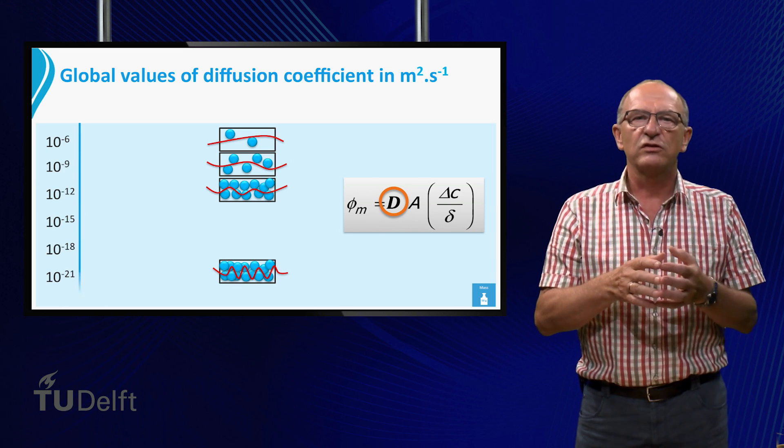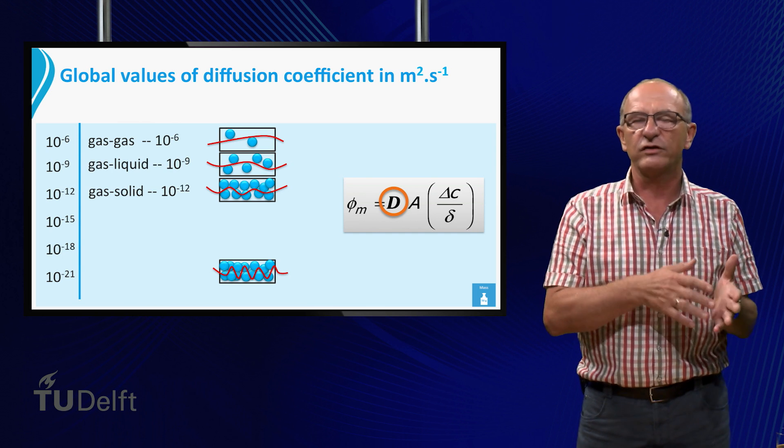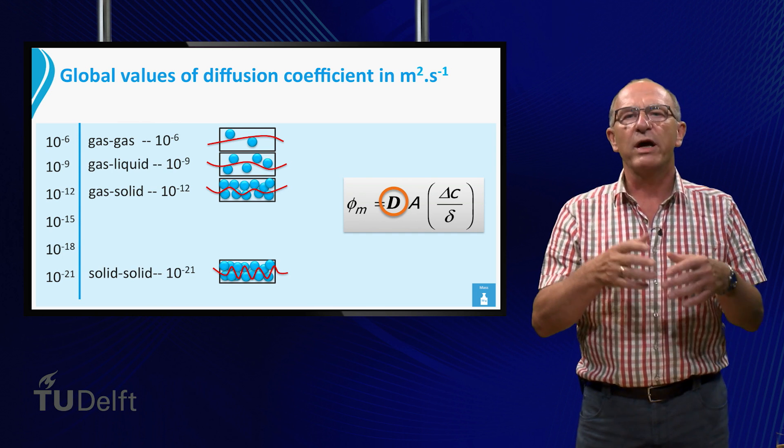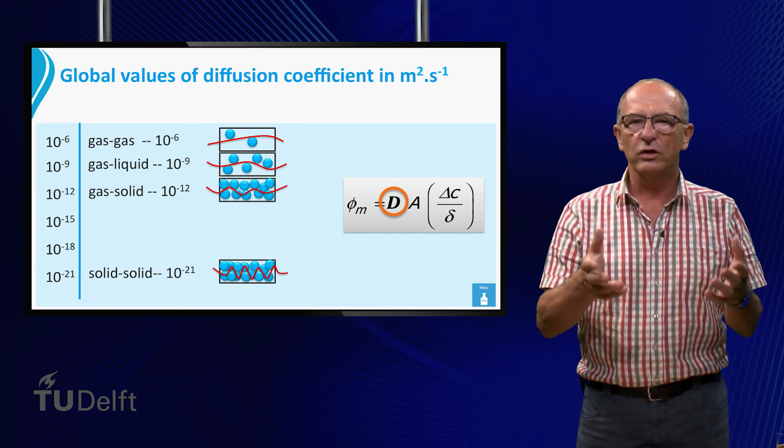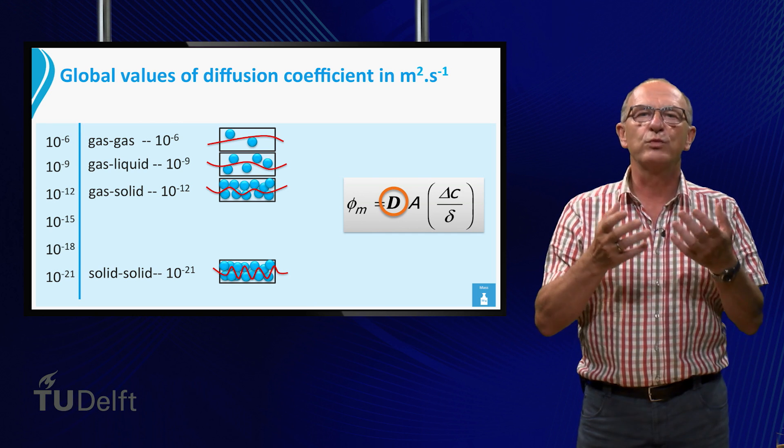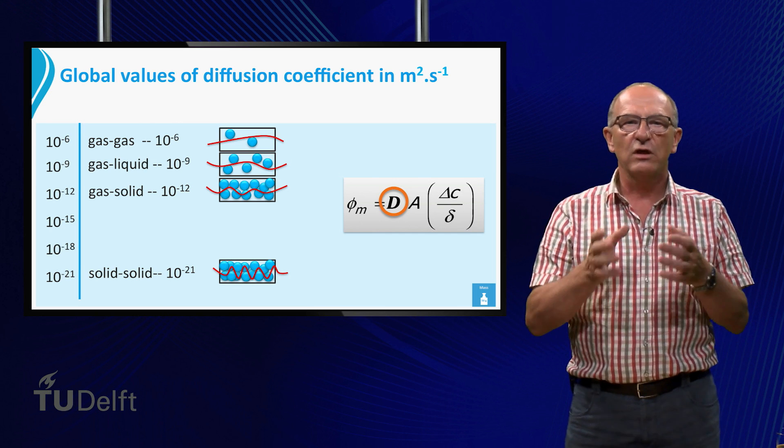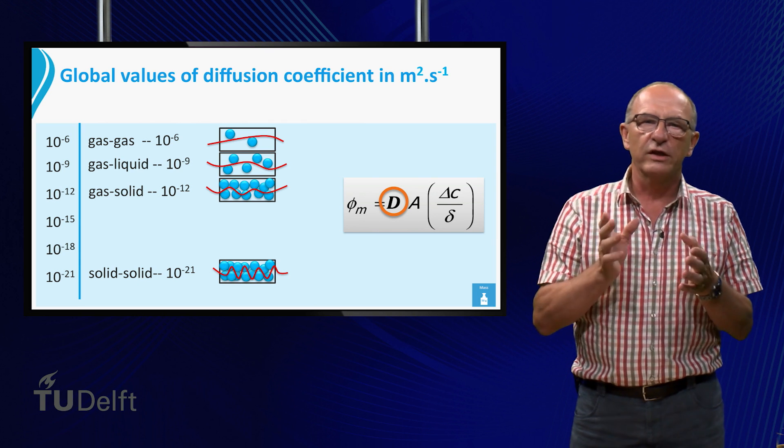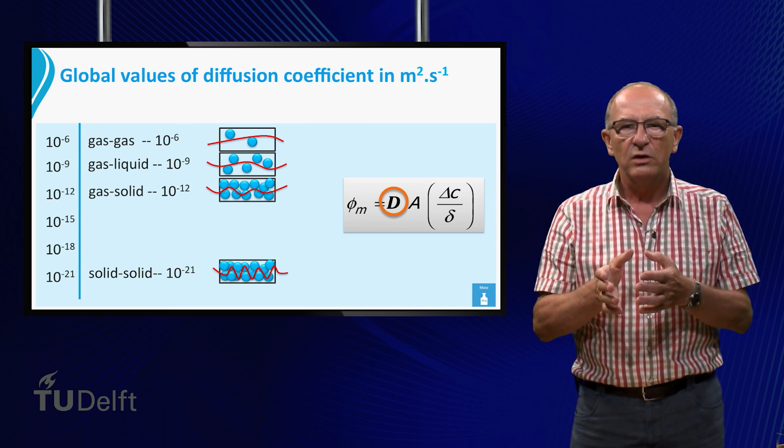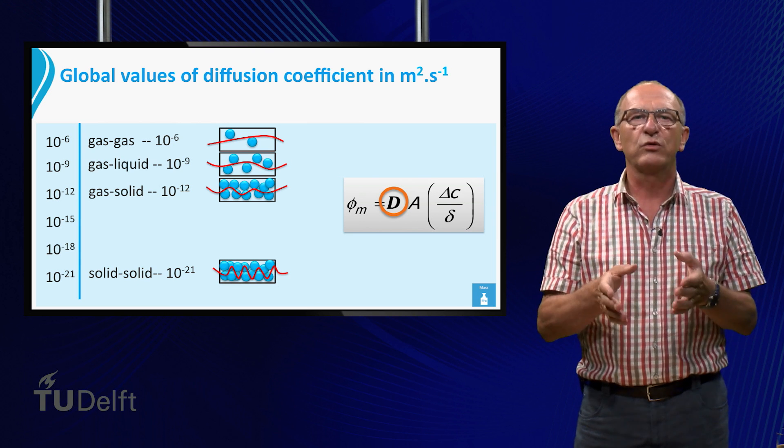Let's look a little bit at the values. Gases in gases is around 10^-6 meters squared per second, and if you have gases in liquids, it would be 10^-9 meters squared per second. And if you have the same gas in a solid, you would have 10^-12 meters squared per second. So in steps of 1000 it goes down. Sometimes it goes down so much with, for instance, solids that move in solids. There you have values of 10^-21 meters squared per second.